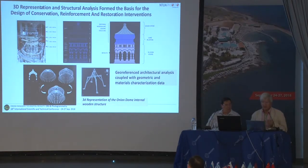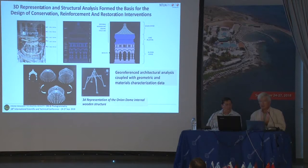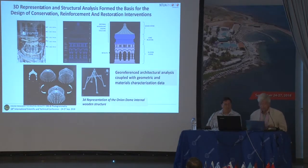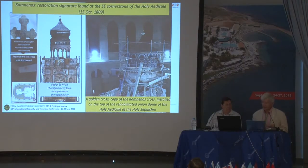Another interesting point is the rehabilitation of the onion dome. The dome was full of scaffolding, and the inside of this dome is made of wood — a wooden structure. They wanted to put a steel base to support this wooden structure. So we scanned the whole interior, and based on our scans, they designed the steel base, which was then put exactly in place inside the dome. This was another contribution from our side.